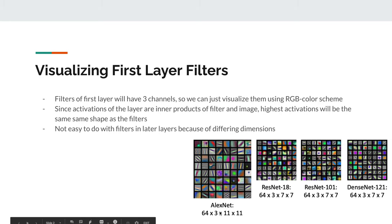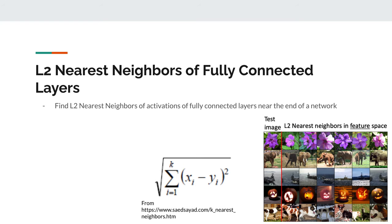In almost all convolutional neural networks, initial layers are always looking for very simple features: striped patterns, edges, lines. You can see that across a variety of popular CNN architectures, almost all of them have some form of edge detection filters. This technique is only applicable to the first layers, because in later layers the filters may have more than three channels, making RGB visualization impossible.